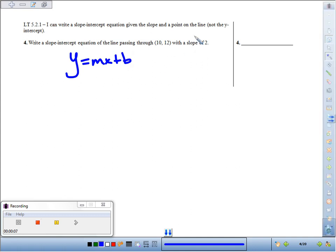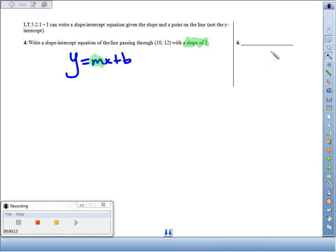The line is passing through (10, -12) with a slope of 2. So we already know a piece of the puzzle. We know the slope is 2, so we can write 2 in for m, our slope. So we know the equation's going to be y equals 2x.